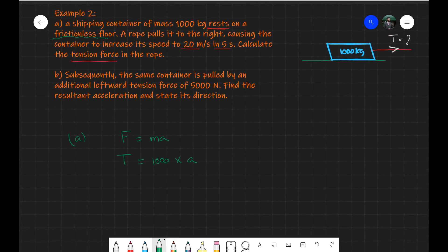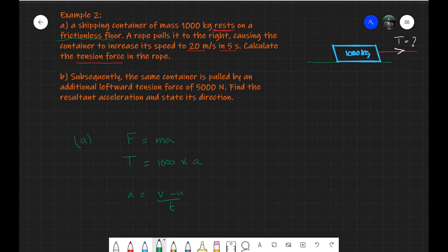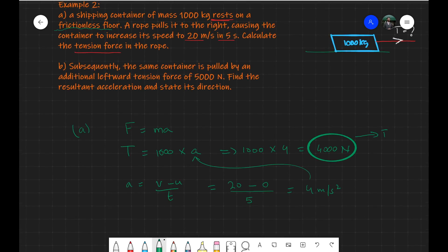Using a = (V - U) / T: the final velocity is 20, initial velocity is 0, and time is 5 seconds. So acceleration equals (20 - 0) / 5 = 4 meters per second squared. Substituting into T = MA: T = 1000 × 4 = 4000 Newtons, directed towards the right. That completes Part A.